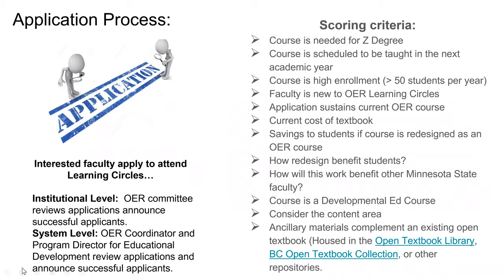There is an application process both at the system level and institutional level where interested faculty apply to attend the learning circles. At the institutional level the OER committee reviews applications and announces successful applicants. At the system level the OER coordinator and the program director for educational development review the applications. Today I'm going to focus on the general criteria for the system level applications.